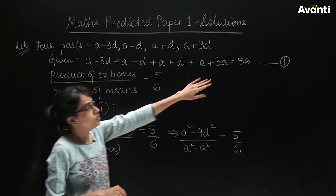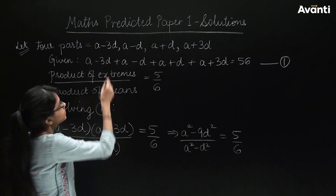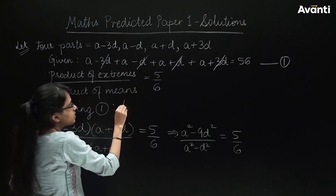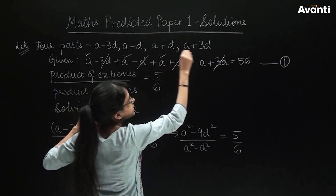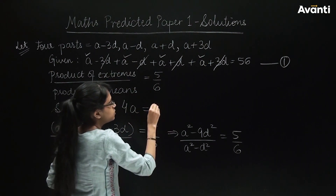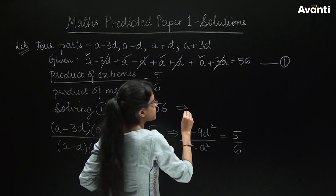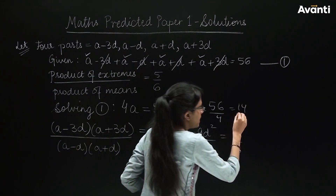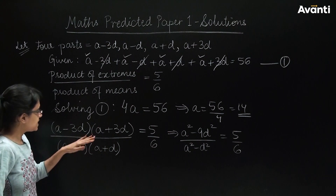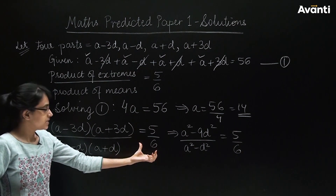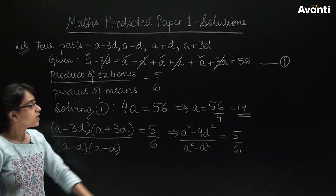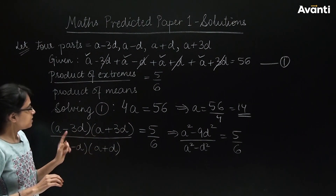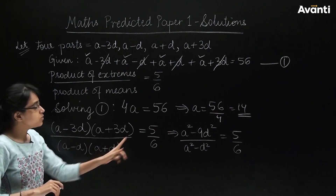First, we are given that the sum is equal to 56. If you look at the equation, you can cancel out many terms. You will be left with 4A. So 4A is equal to 56, which gives A is equal to 56 upon 4, which is 14. The second condition given is the ratio equal to 5 by 6. We have not done anything complex here — just equate the product of extremes upon product of means to 5 by 6.